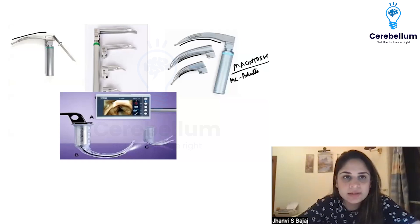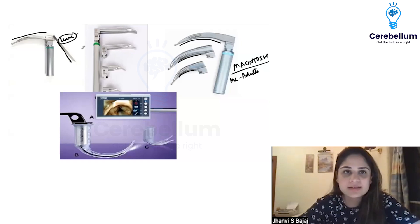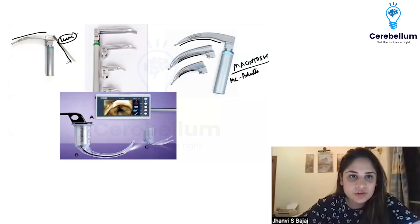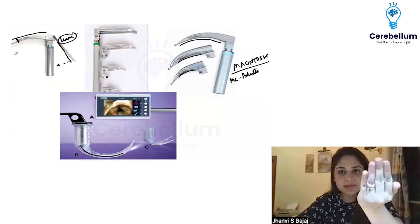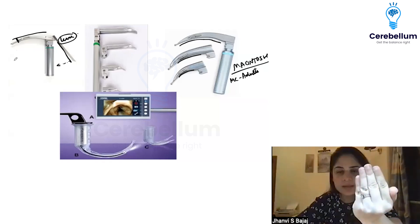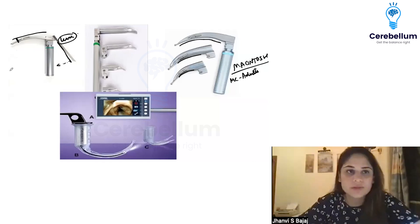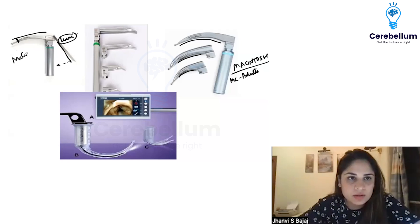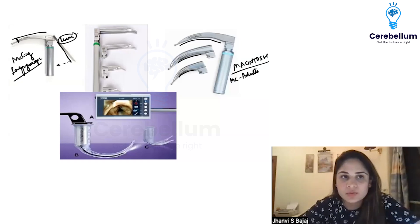If you have a curved blade with a lever attached over here — and this is called a lever — when you push this lever down, this part is flexible and moves up. When it moves up like this, it also lifts up the epiglottis along with it. So this one is called the McCoy laryngoscope. Whenever you have a curved blade plus a lever, it is the McCoy laryngoscope.